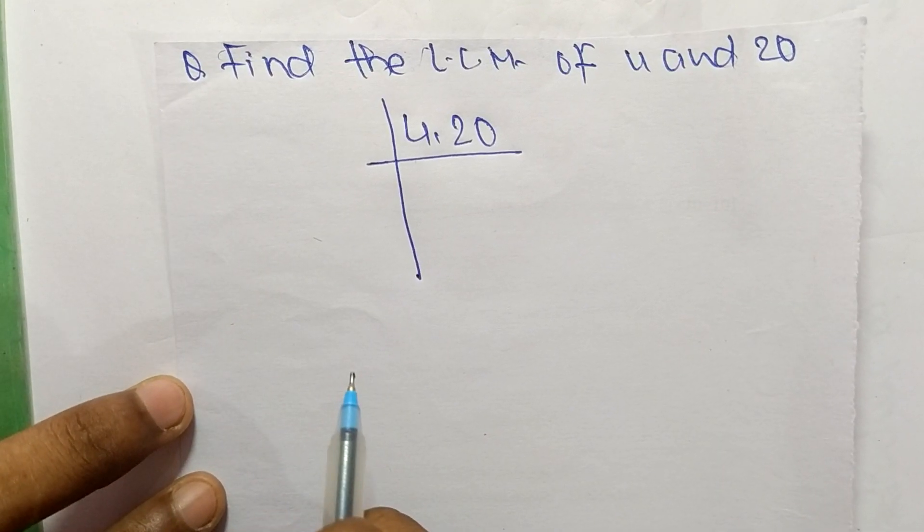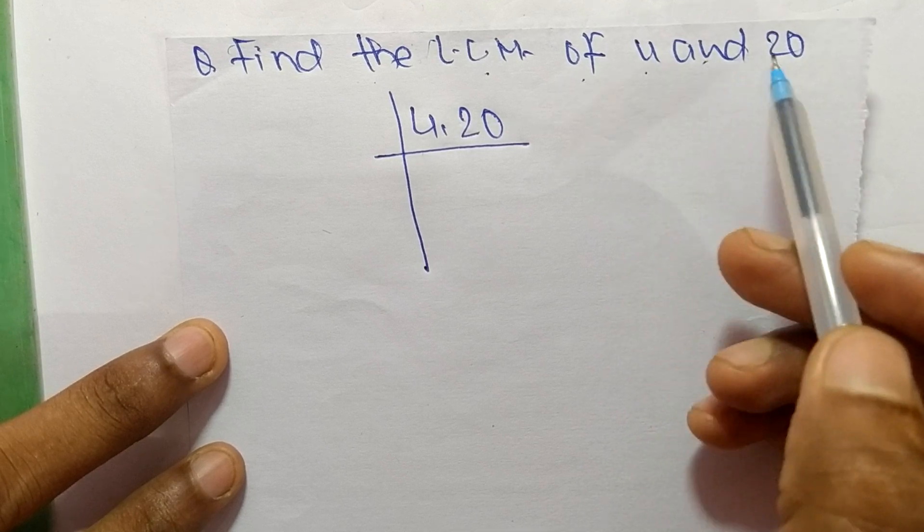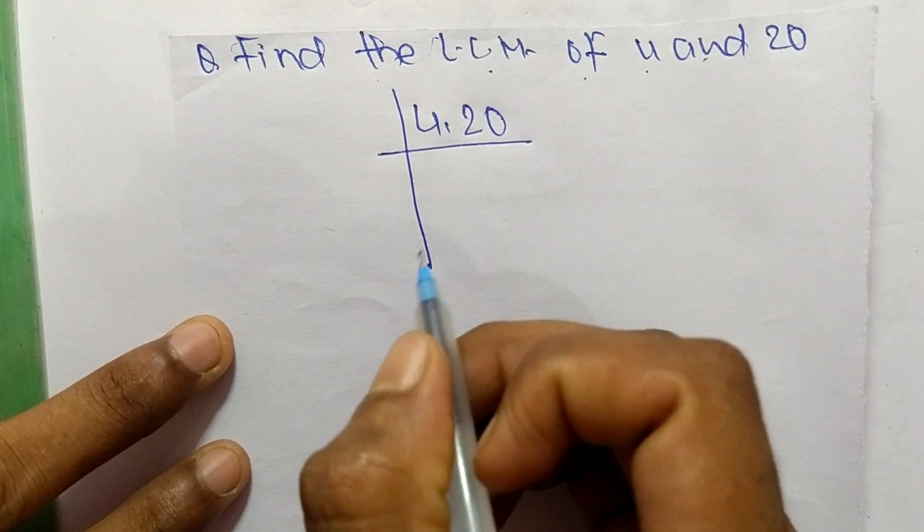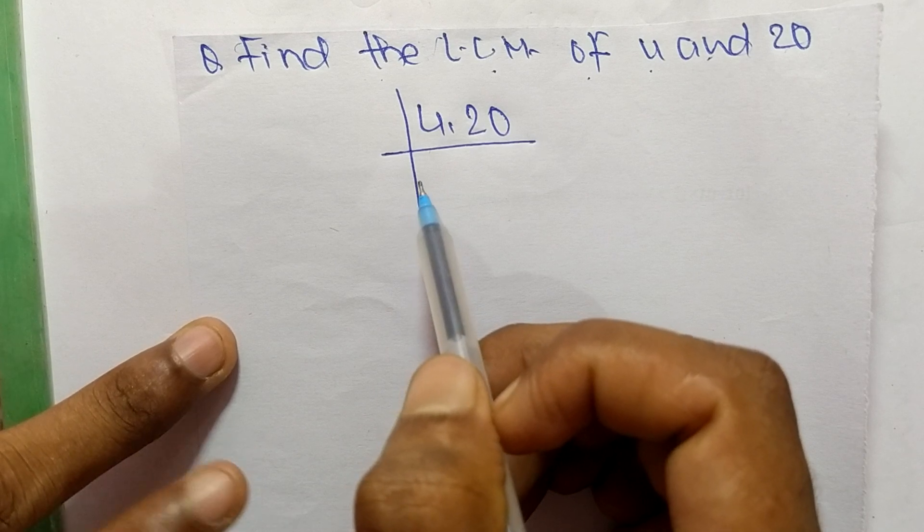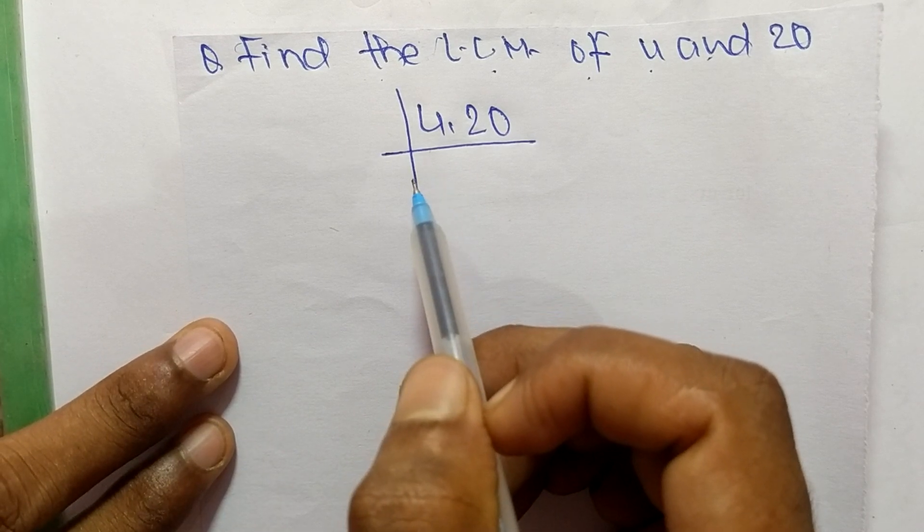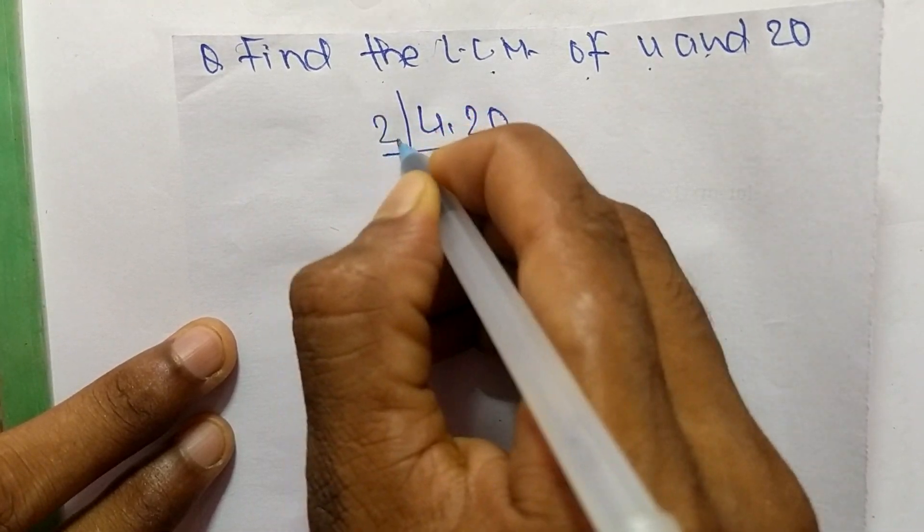So today in this video we shall learn to find the LCM of 4 and 20. To find LCM, first we have to choose the lowest number which can exactly divide both numbers. The lowest number is 2.